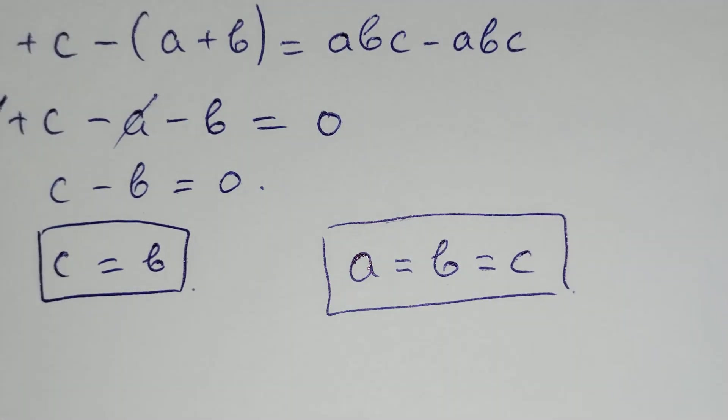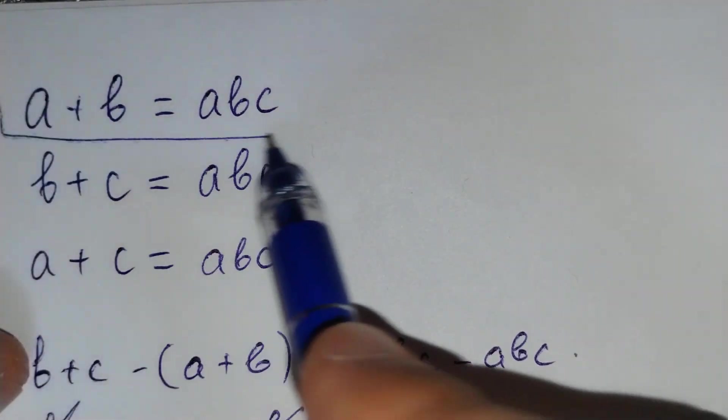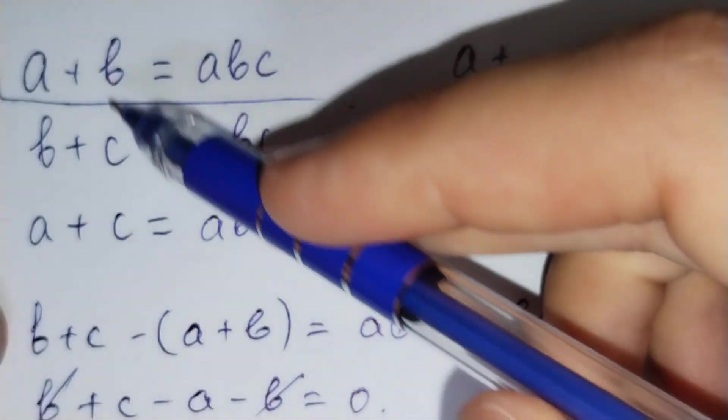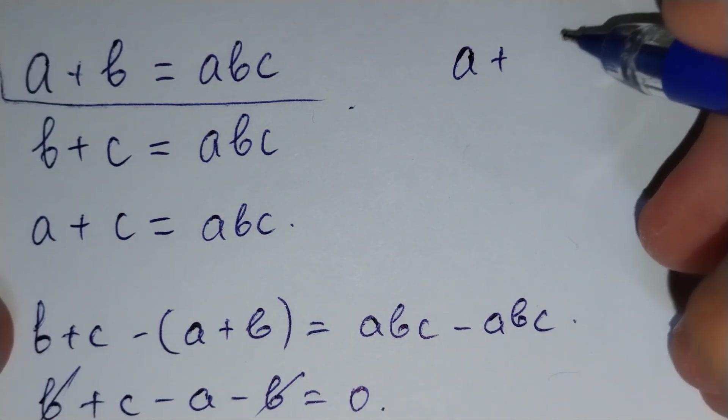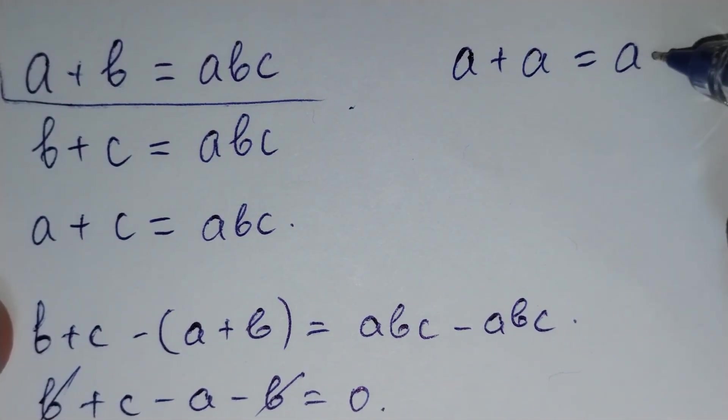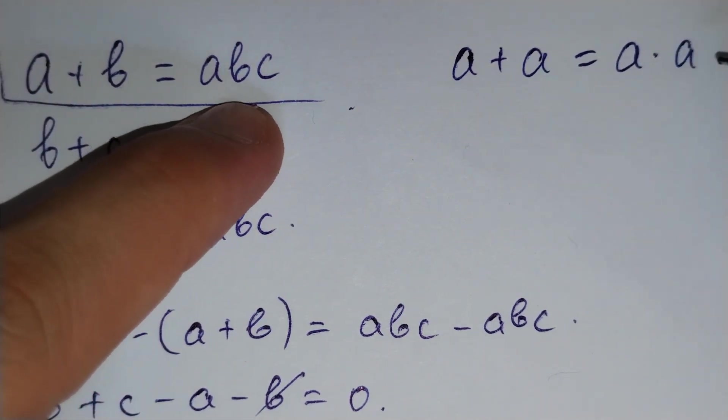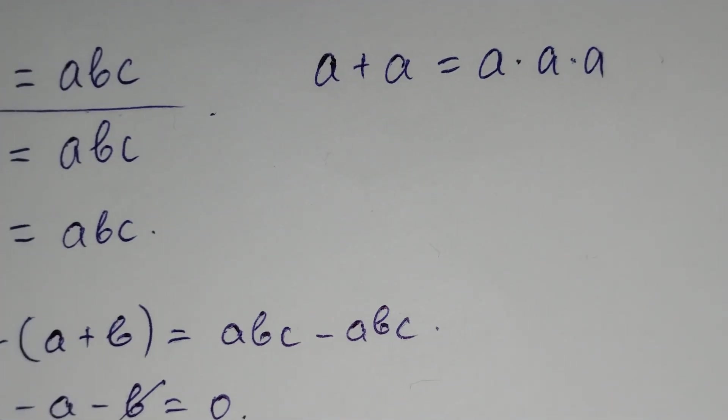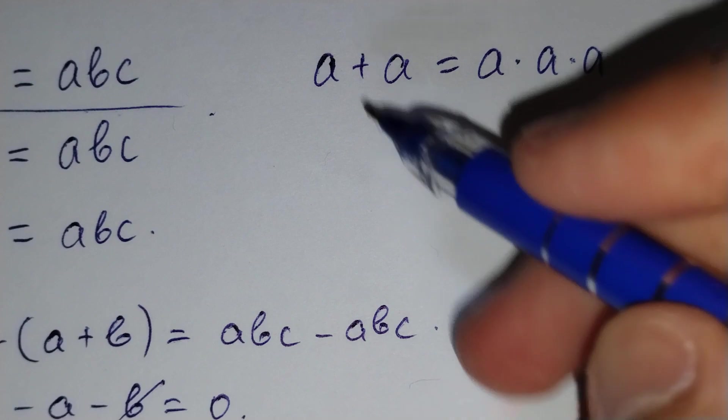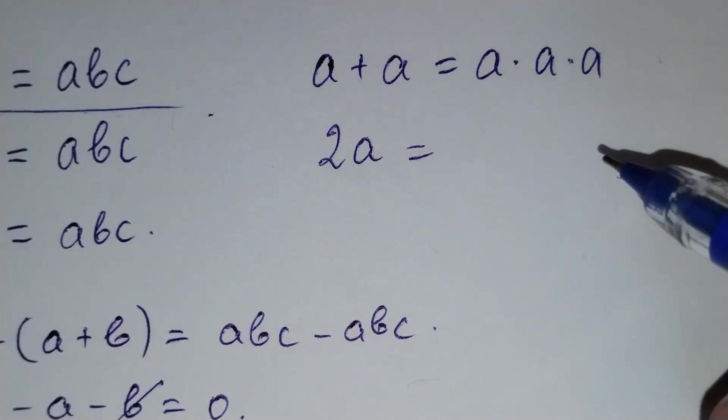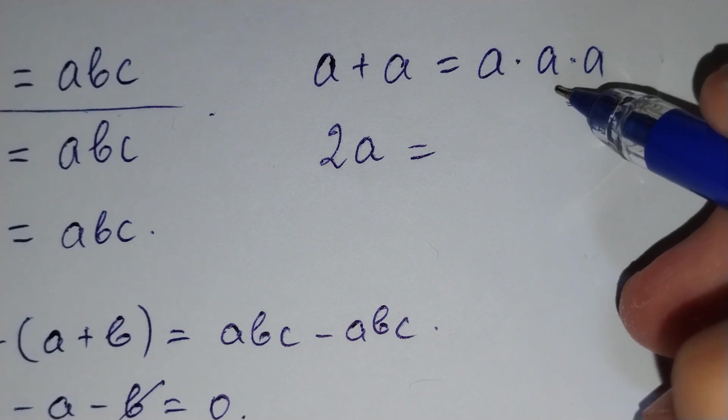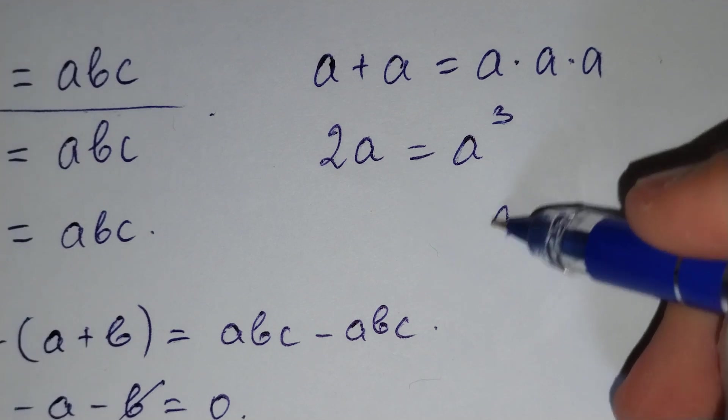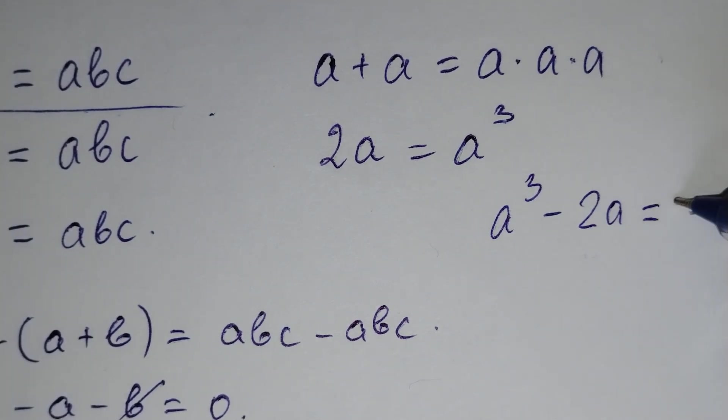Let's substitute: a plus b equals abc, and we may write this as a equals a times b equals a, and c also equals a. So a plus a equals 2a equals a cubed, and a cubed minus 2a equals zero.